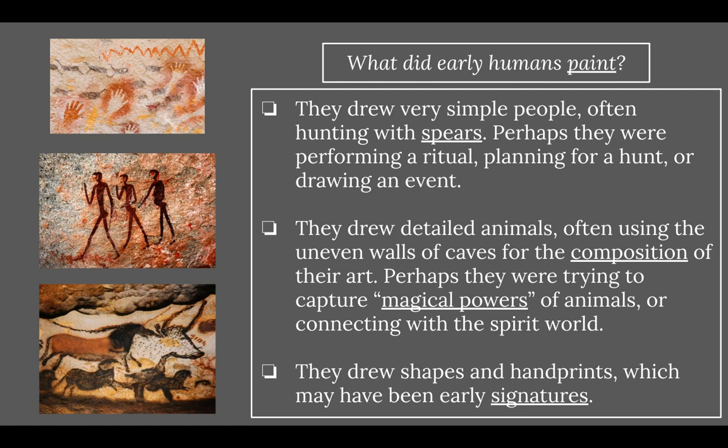They also drew shapes and handprints, which may have been early signatures — an interesting theory that a handprint could have been used as a signature. Or maybe shapes and patterns represented things or held meaning.